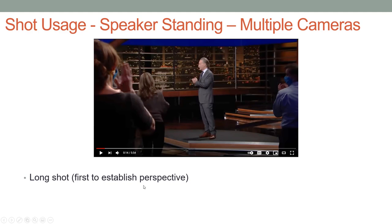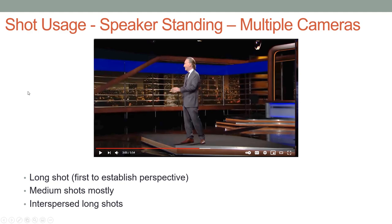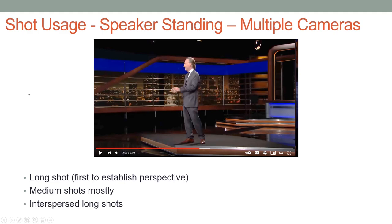Same thing with Bill Maher. We start with the long shot to establish perspective and let us know where he is in his room. We cut to the medium shot, waist up, and this is where we stay mostly for this monologue. Every once in a while we'll jump back to a long shot, just to switch things up for the audience and give perspective as to where Maher is in his discussion. If it's a single camera, consider zooming in and out; multiple cameras, you can switch from one to another.